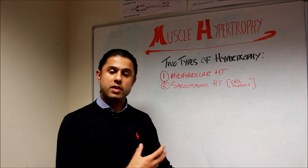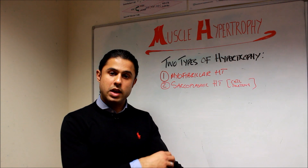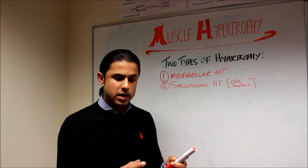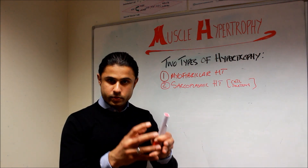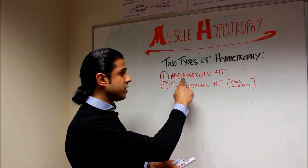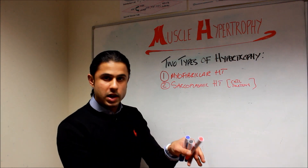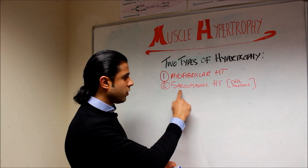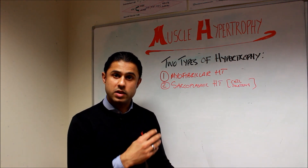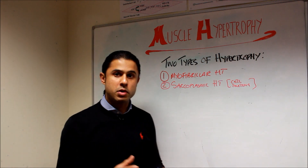Sarcoplasmic hypertrophy is when you get the attraction of extracellular water into the sarcoplasm — into the muscle cell itself — and you start to get an increase in the swelling of the cell. The increase in size is not due to an increase in myofibrils, and remember it's the myofibrils that contain the sarcomeres that cause stronger contractions. So you've got an increase in size, but it's purely down to having more extracellular water within the sarcoplasm.